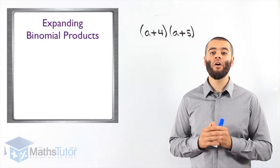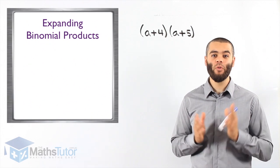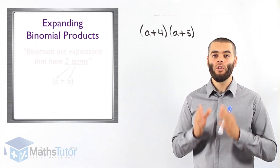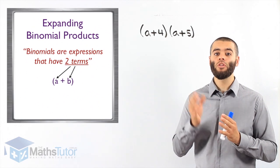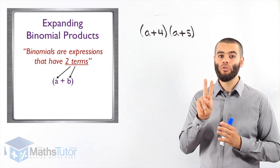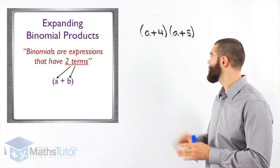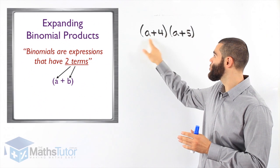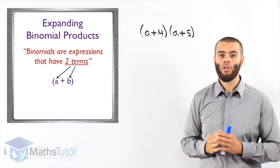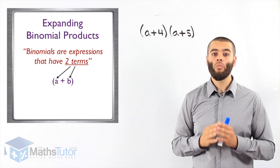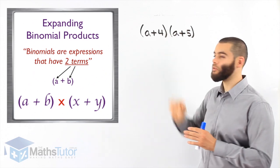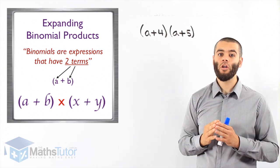Today we're going to be learning about binomial products. What are binomial products? Let's understand the word binomial. When we're talking about binomials, we're talking about binomial expressions. Binomial expressions have two terms. This is a binomial expression — it has two terms. Another binomial expression — two terms here as well. So when we're talking about binomial products, we're basically multiplying the two binomials.